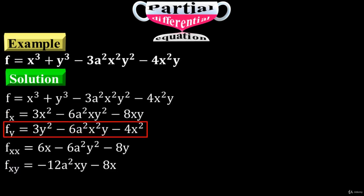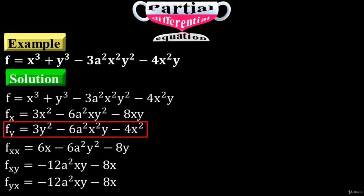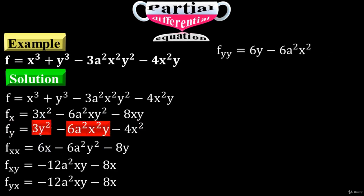Now take f sub y and differentiate it first with respect to x — these are the terms with x variables. Differentiation of f sub y with respect to x is minus 12a squared times xy minus 8x. Then differentiate it with respect to y — y variables are at two places. Differentiation of f sub y with respect to y is f sub yy equals 6y minus 6a squared times x squared.